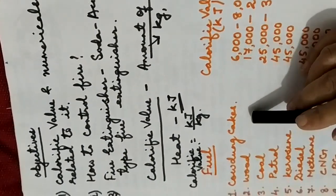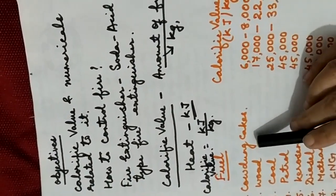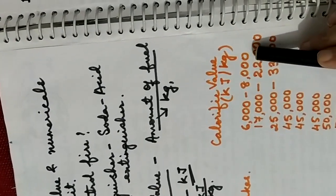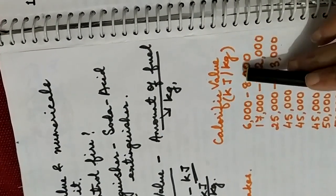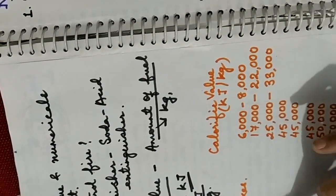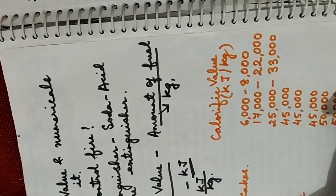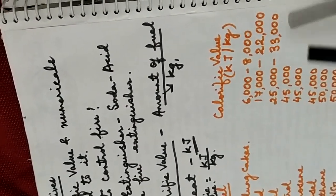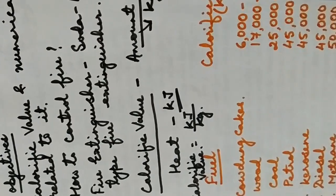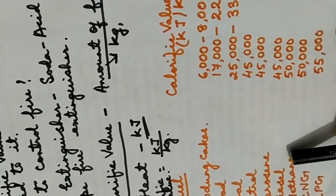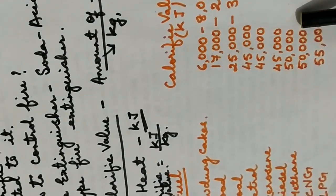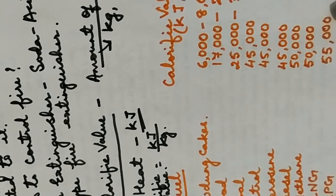Now children, just go through this table. It is given that 1 kilogram of cow dung cake burns and produces about 6,000 to 8,000 kilojoules. The calorific value of wood is 17,000 to 22,000, and coal is about 25,000 to 33,000. Petrol is approximately 45,000, diesel and kerosene are also similar. Methane has a calorific value of about 50,000 kilojoules per kilogram, and CNG and LPG also have about 50,000.